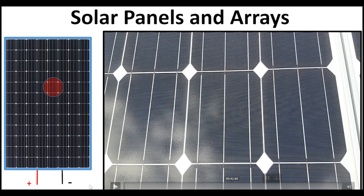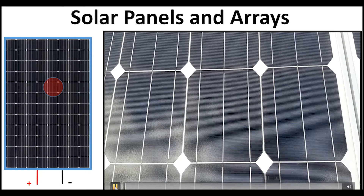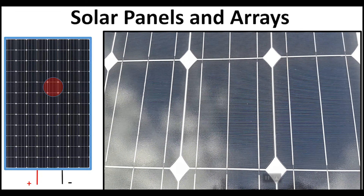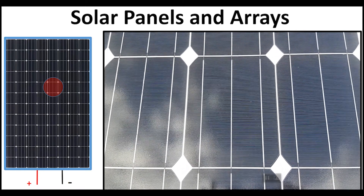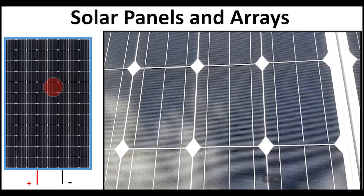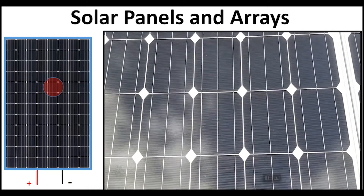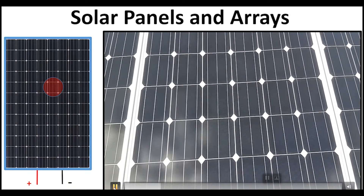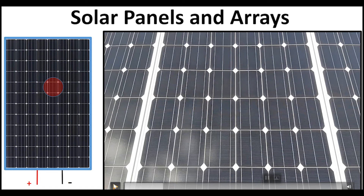Solar panels and arrays. Now you know the small unit called a PV cell — you can see it here. I'm going to show you a small unit and then a panel. This is a solar panel, and you can see there are four panels in a row, which is called a solar array.